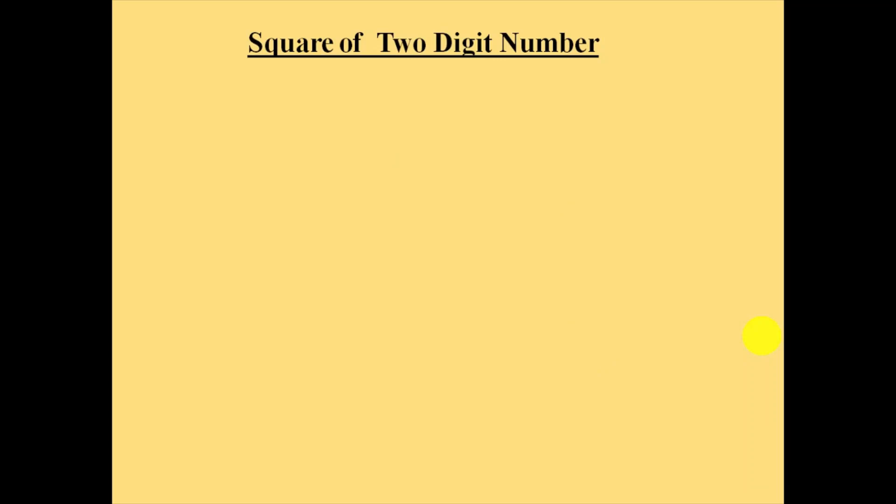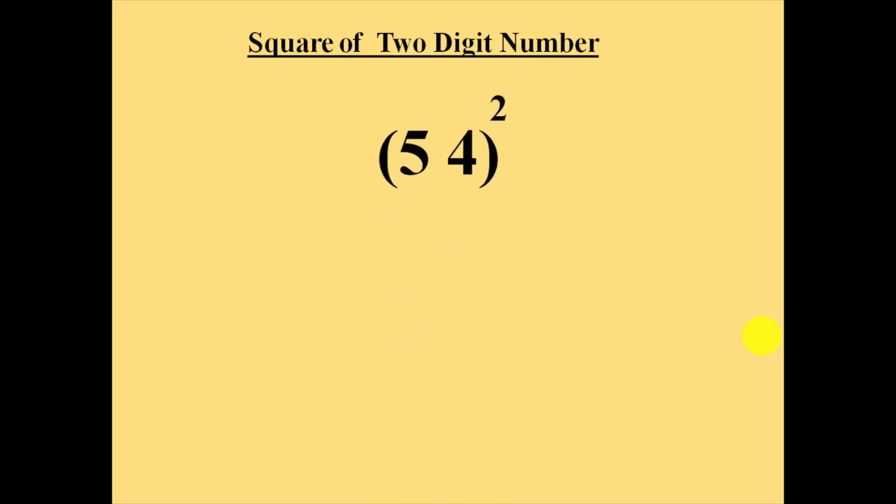Hello everyone. Today we are going to see how to easily calculate the square of a two-digit number. For example, the square of number 54.